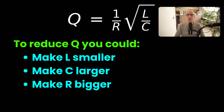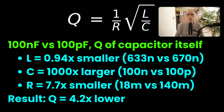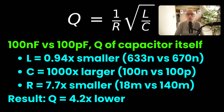A capacitor is basically a series resonator. The Q factor tells you how good the resonator is at resonating — if it's very good at resonating, you can get really high peaks in your decoupling impedance. To reduce Q, you could make the inductance smaller, make the capacitance bigger, or make the resistance bigger. Comparing 100 nF versus 100 pF: 100 nF has a much lower Q — the capacitance is 1000× bigger, the inductance at high frequencies is lower, and the resistance is around 8× smaller, resulting in a 4.2× lower Q factor of the component itself.